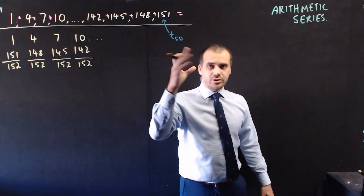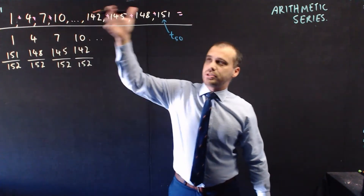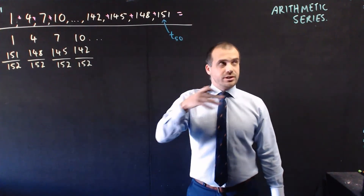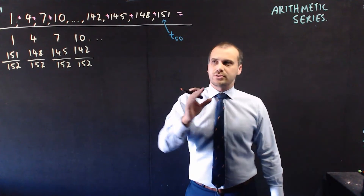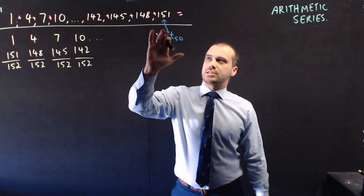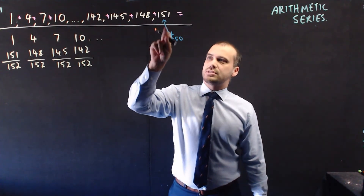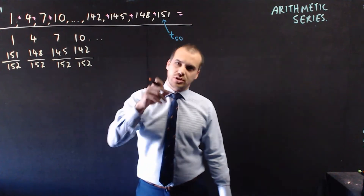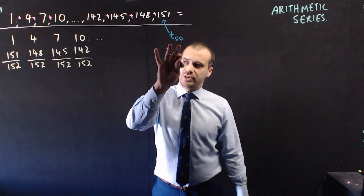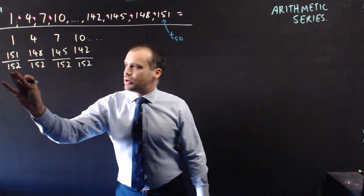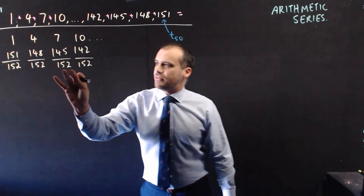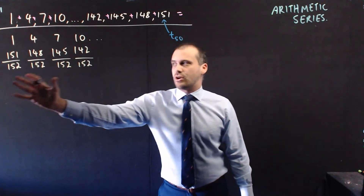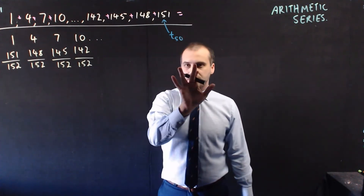You could do that by subbing in the first term and the common difference and rearranging the arithmetic sequence formula, but I'm going to tell you that this is term 50. So if that's term 50, then we know there are going to be 50 divided by 2 pairs of numbers.